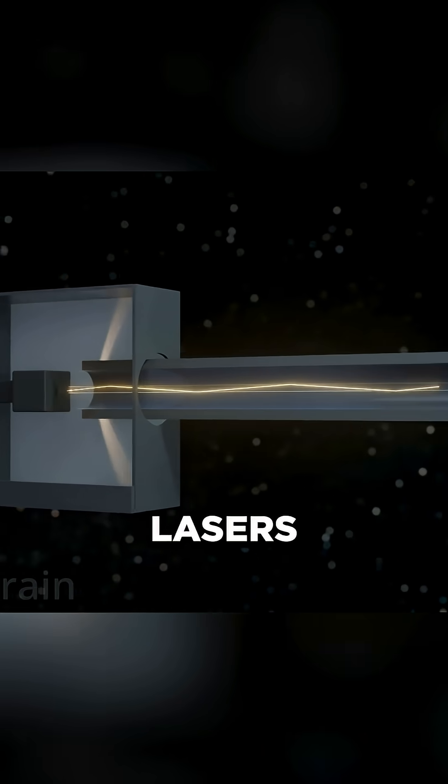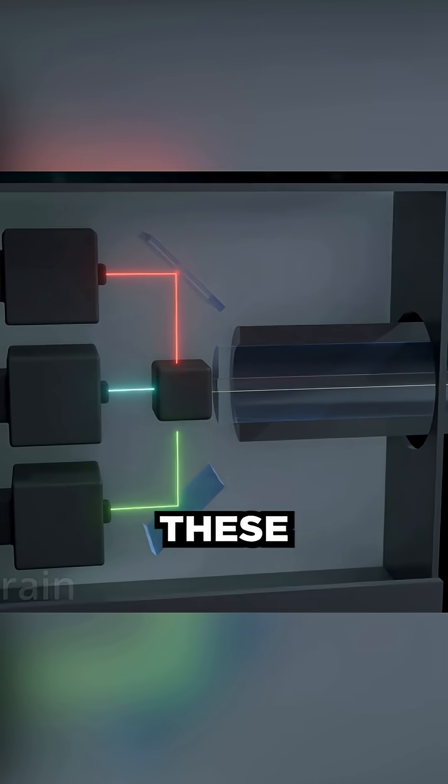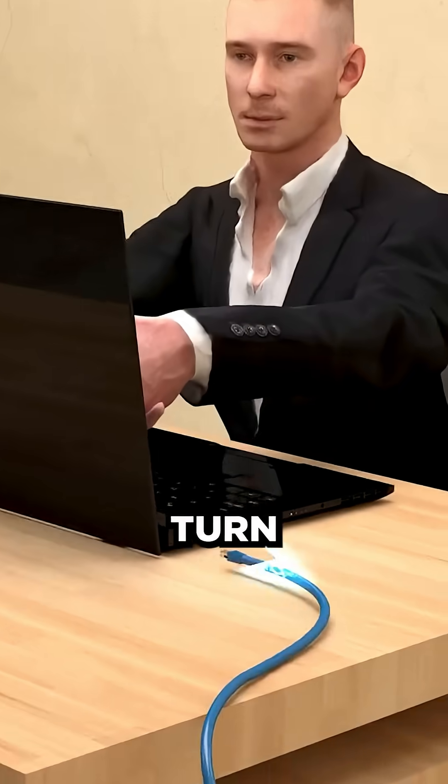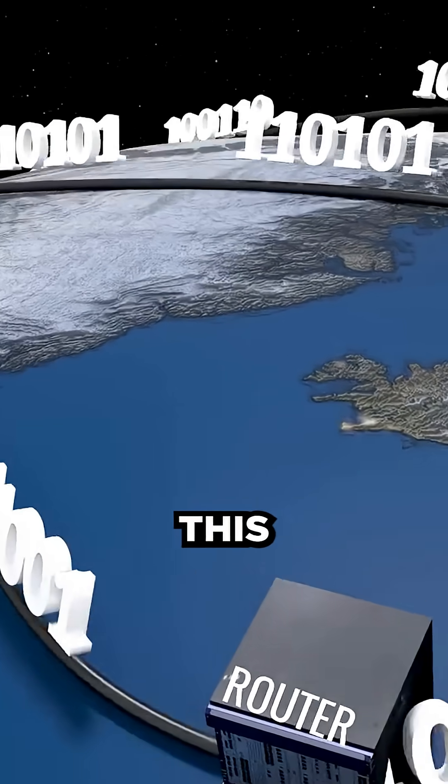At the transmitting end, lasers or LEDs convert electrical signals into these light pulses. They travel through the fiber, and on the receiving end, photodiodes turn the light back into electrical signals. And that's how you're seeing this video on your screen, all thanks to the power of light.